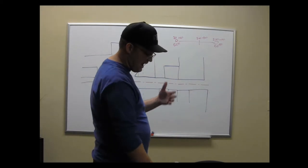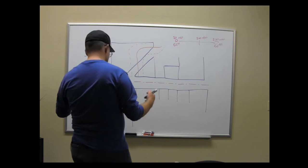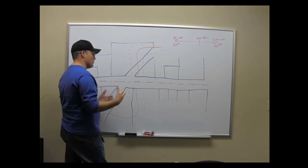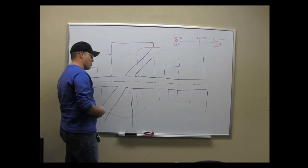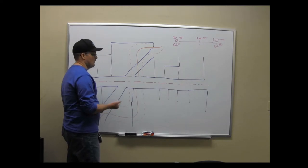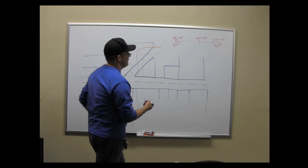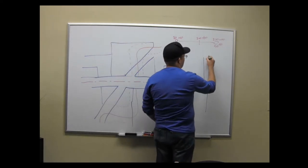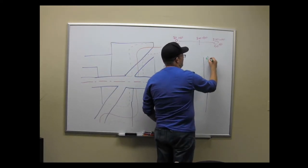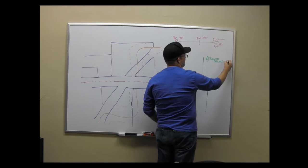Let's go over at a high level what services a land surveyor would offer on a right-of-way project. You're going to build a highway, a pipeline, a canal, or something like that. We might help with route selection — that's usually an engineering thing, but it can be a surveying thing too. Sometimes we call this route planning.